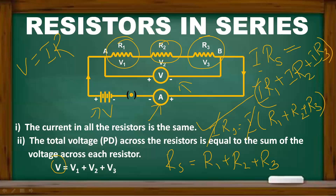We have three resistors: R1 plus R2 plus R3. If there are n number of resistors, the effective resistance is R1 plus R2 plus R3 plus ... plus Rn. The effective resistance equals the sum of all the resistor values. This is a very important derivation for resistors in series.